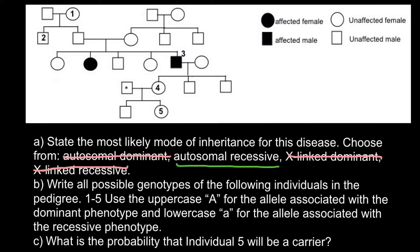The only variant possible here is autosomal recessive. For example, this affected female would have genotype aa, and her parents would have to be heterozygous — Aa and Aa. In this case, there is a one-quarter probability of having an affected child. They have five children and two are affected. The affected male would also have genotype aa, but it's not necessary that exactly 25% of the children inherit the disorder — all or none of them could inherit it.